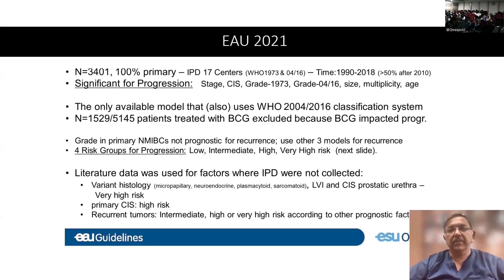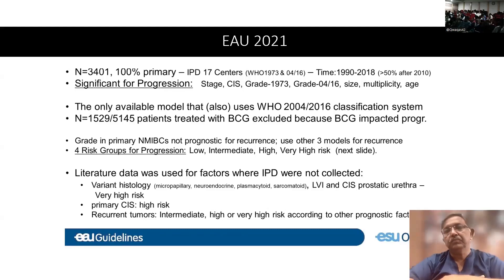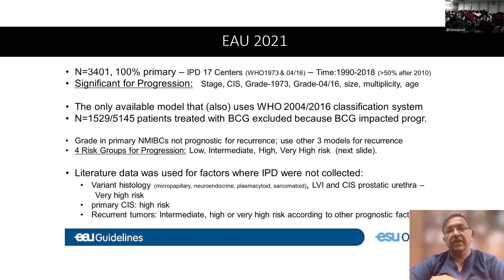One addition in this latest risk calculator is the new risk group: very high risk. So initially we had low risk, intermediate risk, and high risk, and now there is an addition of a very high risk non-muscle invasive bladder cancer. Something new is the inclusion of variant histology — micropapillary, sarcomatoid, plasmacytoid — and the presence of lymphovascular invasion and CIS in the prostatic urethra, all categorized into the very high risk group.